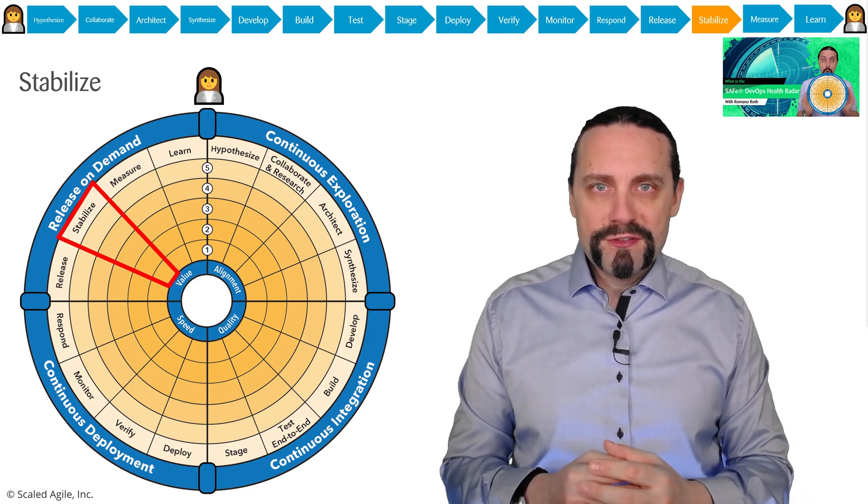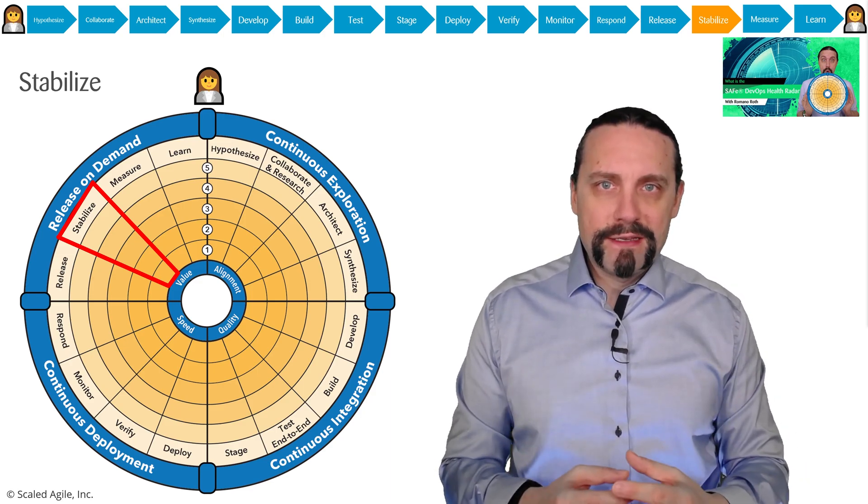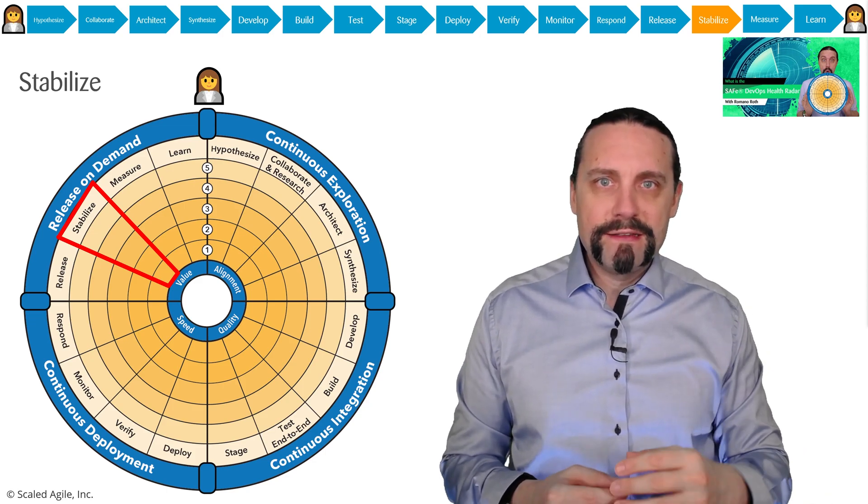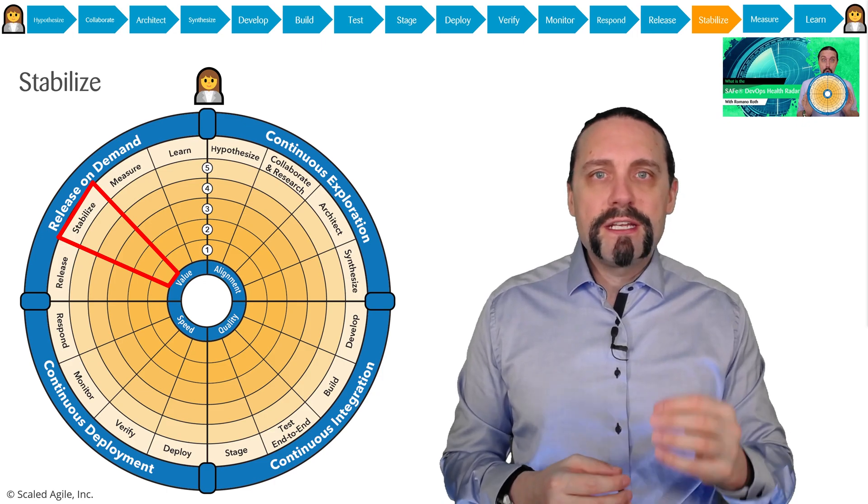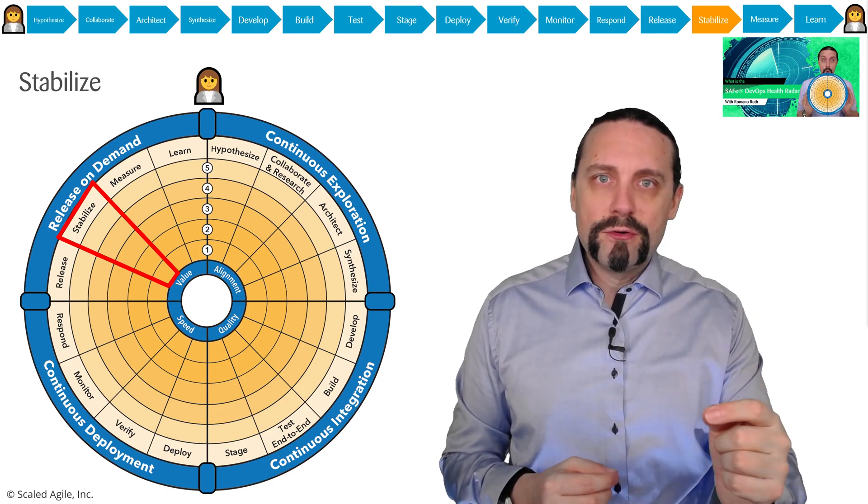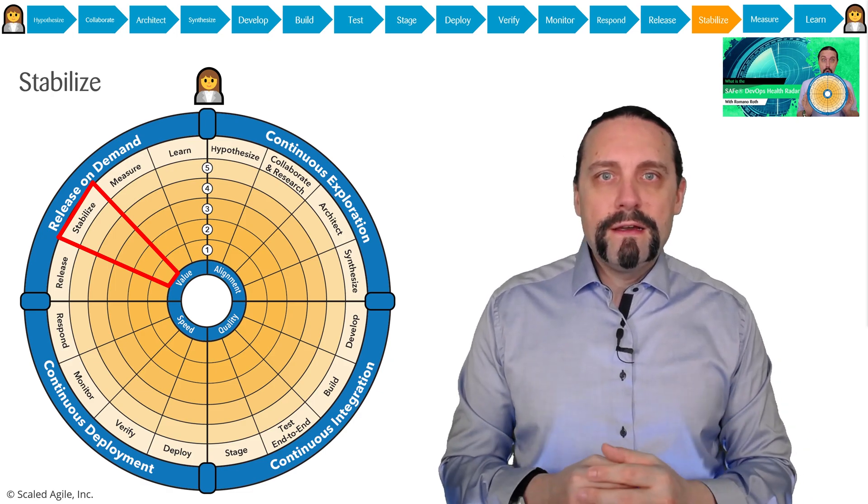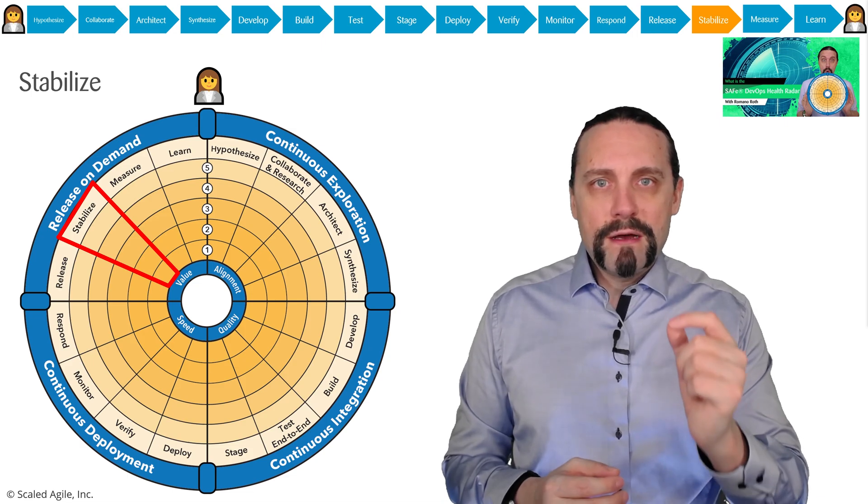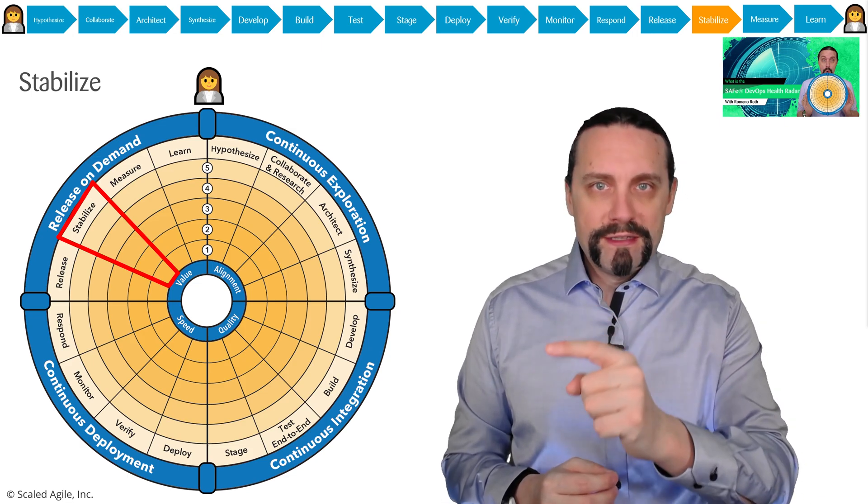With this epic and the hypothesis behind it, we go into collaborate and research. We identify the real customer need or the real market need. Then we architect the minimal amount of architecture needed to prove the hypothesis.